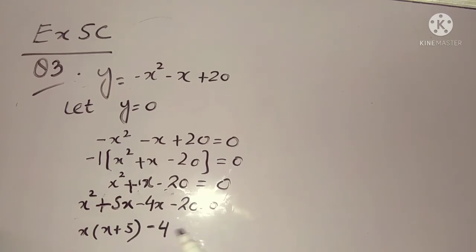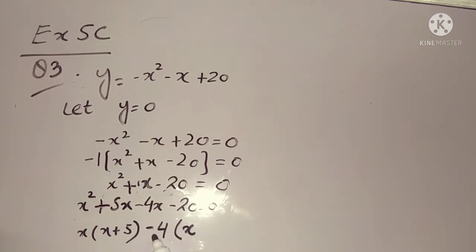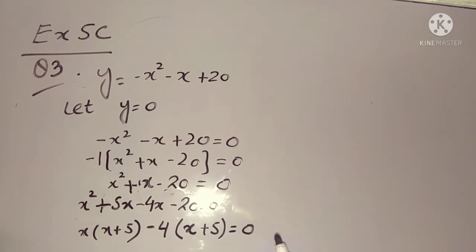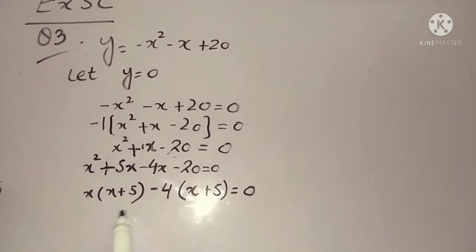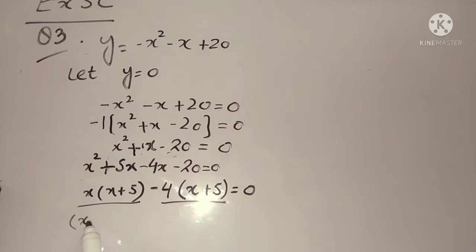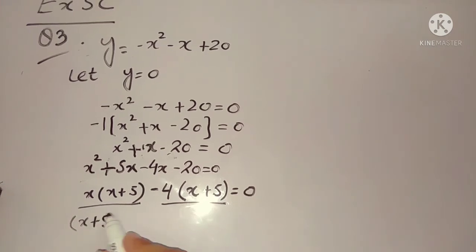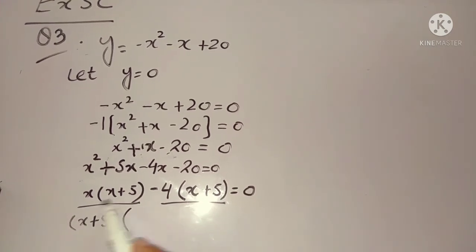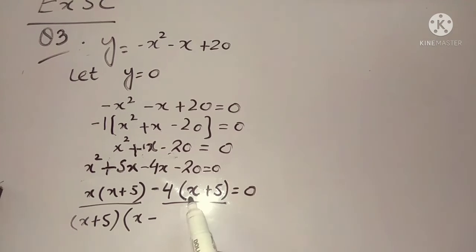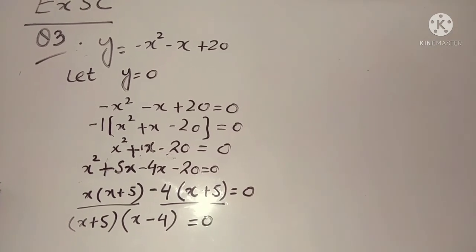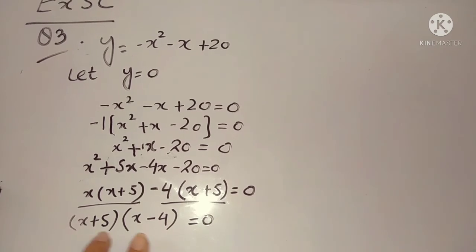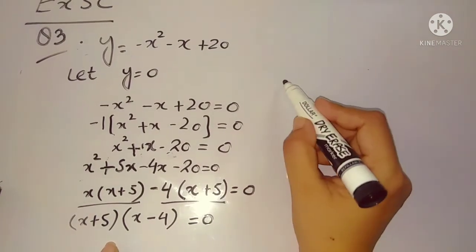Now we make factors to find the values of x. The coefficient of x² is 1, so multiply the first and last numbers: 1 × 20 = 20. We need two factors that multiply to give 20 and subtract to give 1 — the coefficient of the middle term. Those two factors are 5 and 4: 5 × 4 = 20, and 5 - 4 = 1.